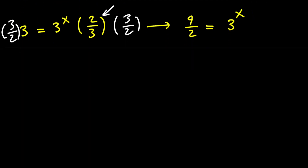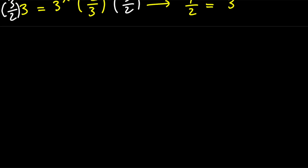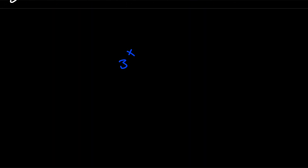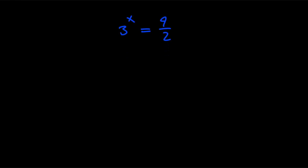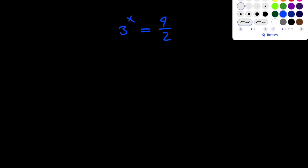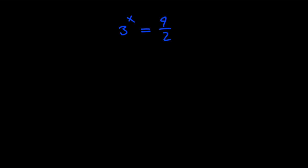So what we want to solve is 3 to the power of x equals 9 halves. In order to solve this for x, let's go ahead and take the log of both sides with base 3. So we're going to have log of 3 to the power of x with base 3 equals log of 9 halves with base 3.